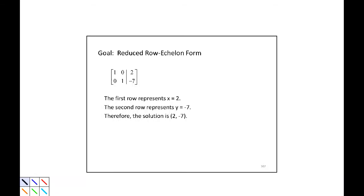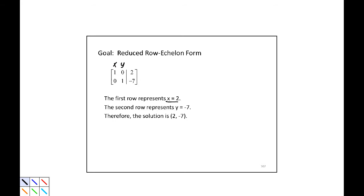The goal as we solve systems of equations with matrices is reduced row echelon form. That is something of the form where reading off the first row we have 1, 0, and some constant — in this example, 2 — and in the second row, 0, 1, and then some constant, here negative 7. Each of our columns represents a variable, so the first row represents 1x plus 0y equals 2, or x equals 2, and the second row represents 0x plus 1y equals negative 7, or y equals negative 7. This tells us our solution is the ordered pair 2 comma negative 7.